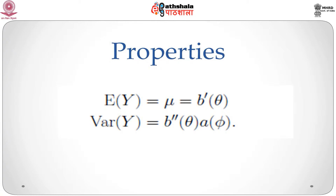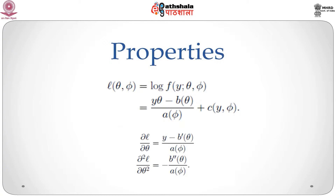The one-parameter exponential family has some key properties. It is possible to show that the expectation of y is given by b'(theta), and the variance is given by b''(theta) times a(phi). The log-likelihood is equal to y*theta minus b(theta), divided by a(phi), plus c(y, phi). The score equation is del l / del theta equal to y minus b'(theta) divided by a(phi), and the second derivative is minus b''(theta) divided by a(phi).